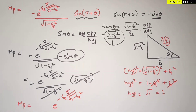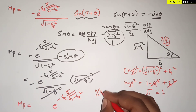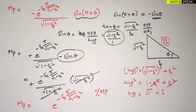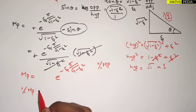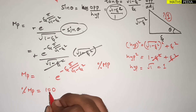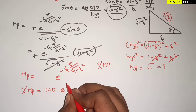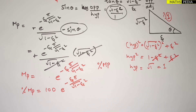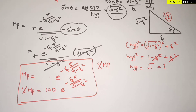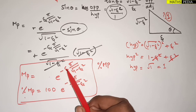The final result is Mp = e^(−ζπ/√(1−ζ²)). To get the percentage peak overshoot, we multiply by 100: %Mp = 100 · e^(−ζπ/√(1−ζ²)). This is the final answer for percentage peak overshoot.